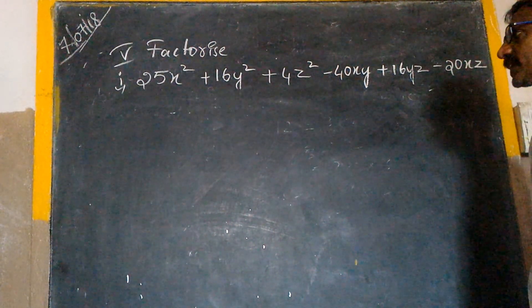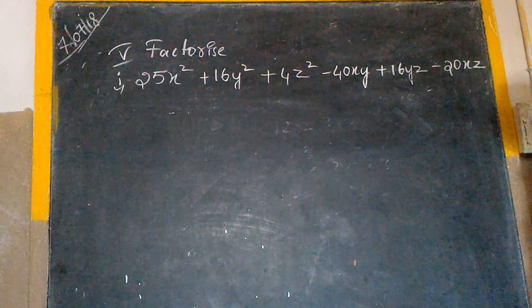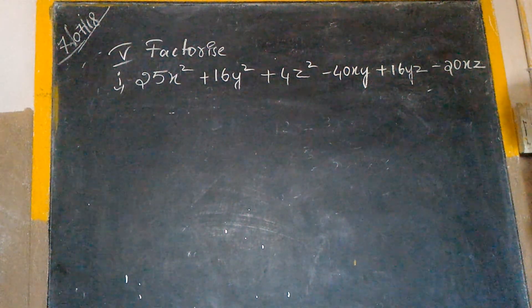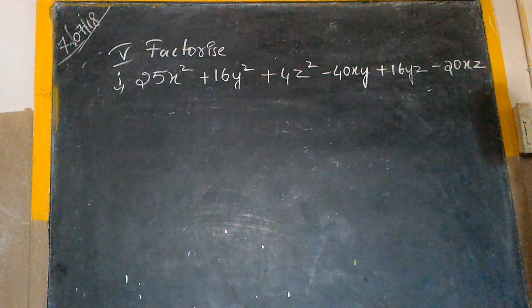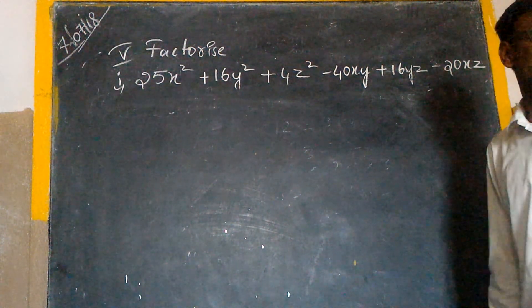Factorize 25x square plus 16y square plus 4z square minus 40xy plus 16yz minus 20zx. We have to factorize this one, that means you have to write product of two expressions.